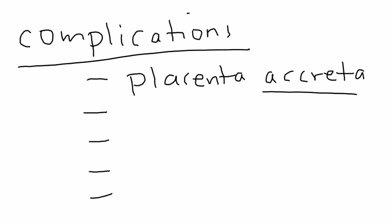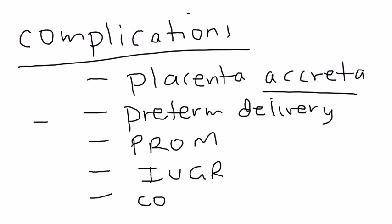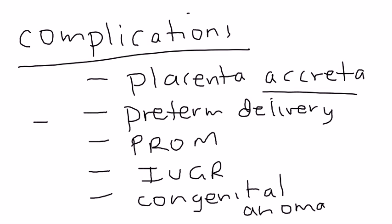Another complication of placenta previa is preterm delivery. Sometimes you actually have to deliver the fetus if placenta previa is occurring in the pregnancy. Additional complications include premature rupture of membranes, intrauterine growth retardation, and congenital anomalies. These illustrate the significance of this abnormal presentation of the placenta.